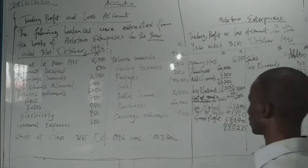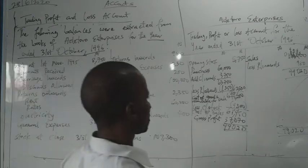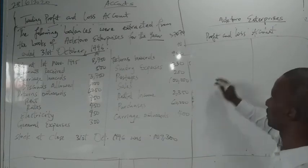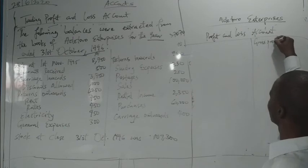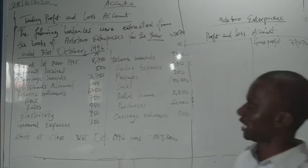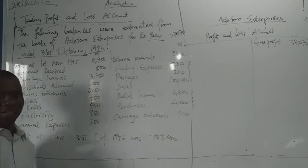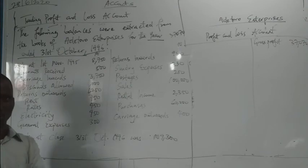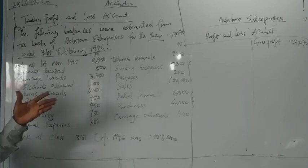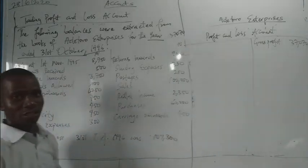We are now entering the profit and loss account section, where we look at all the indirect expenses — all those expenses not directly related to purchasing stock. Purchases of stock is a direct cost, but the remaining costs are indirect and therefore go in the profit and loss section.